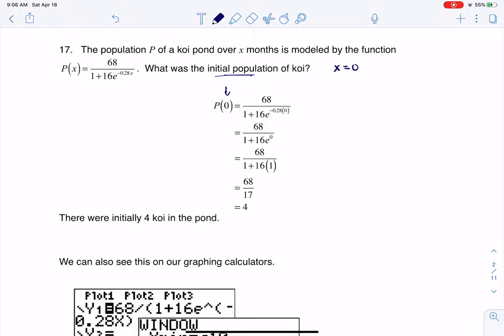You see me plugging in zero for x and then I just work through all of the algebra. E to the zero ultimately is going to be 1, so this becomes 1 plus 16 times 1, and that's 17 on the denominator. 68 over 17 is 4, so there were initially 4 koi in the pond.